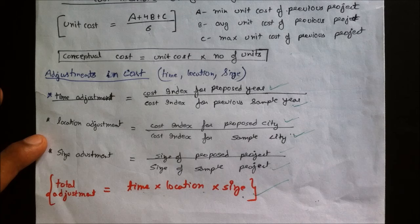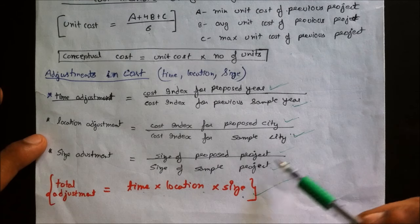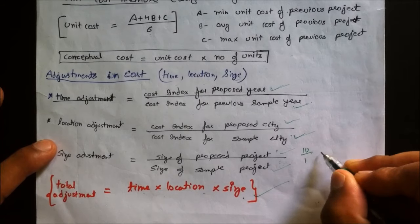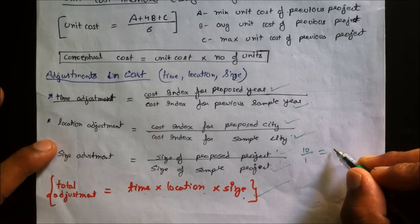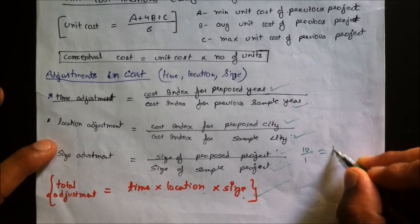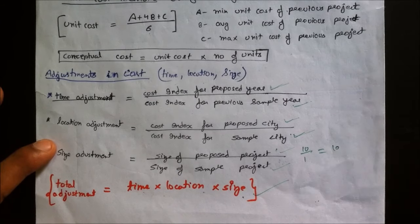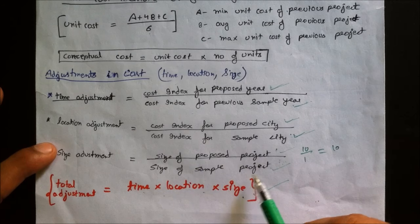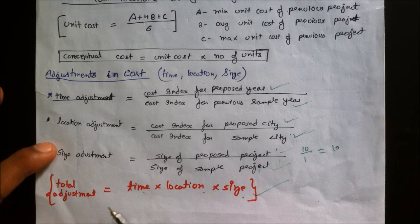For size adjustment, if we built a 1-storey building and now want a 10-storey building, the size adjustment factor is 10/1 = 10. It is calculated as the size of the proposed project divided by the size of the sample project. The total adjustment is the product of time adjustment, location adjustment, and size adjustment.